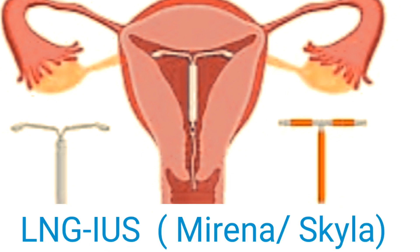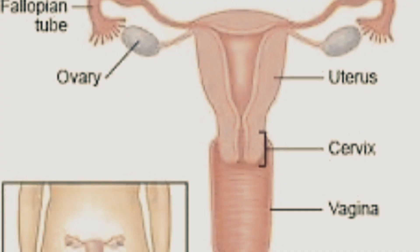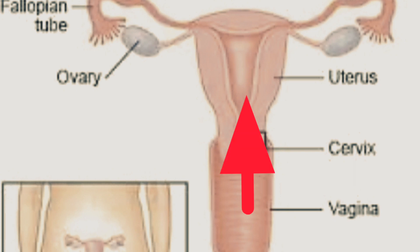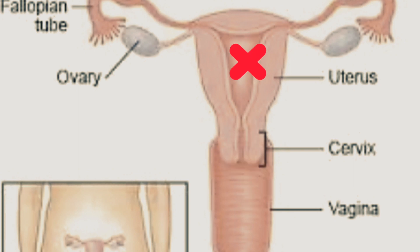The contraceptive effects of the levonorgestrel are mediated via its progestogenic effect on the endometrium, which increases the thickness of the cervical mucus, making it more difficult for sperm to cross into the uterus, and the possibility of fertilization becomes less likely.